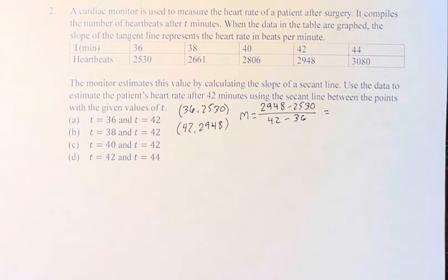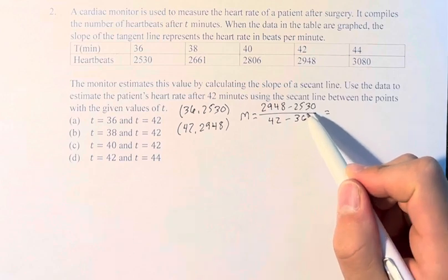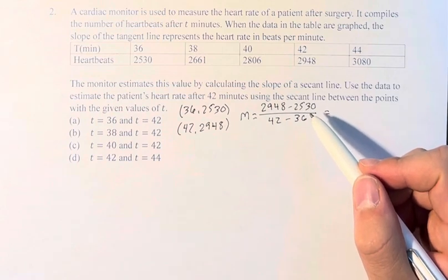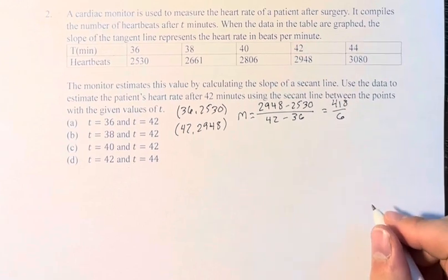And so we just calculate this here. We say 2,948 minus 2,530 is 418, divided by 6.